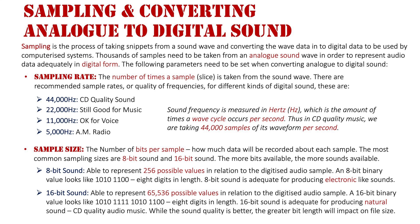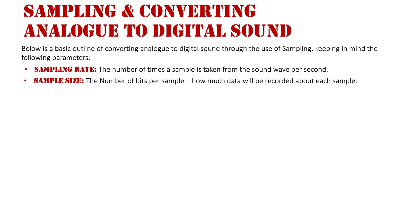16-bit sound is able to represent 65,536 possible values — a lot more. A 16-bit binary value is 16 digits in length, as you can see. It might only look like twice the length, but it's capable of thousands more sounds. 16-bit sound is adequate for producing natural sound and CD quality audio music. While the sound quality is better, it has a greater impact on the file size of the audio being created, because it records so much more information about the audio file.